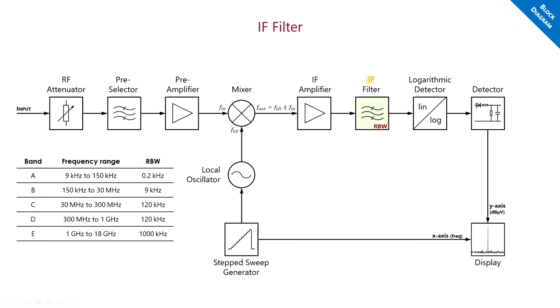One very important component is our resolution bandpass filter within the intermediate frequency, abbreviated by IF. As shown some slides before, the CISPR standard defines the bandwidth of our filter for different frequency ranges. Those ranges are also called bands in the CISPR standard and are labeled with letters from A to E.